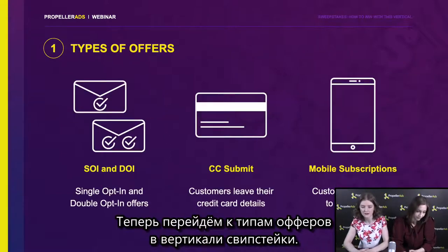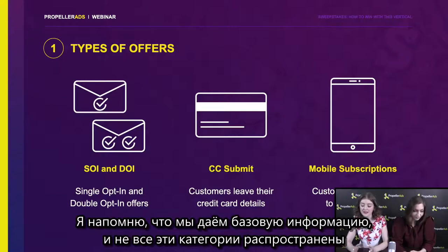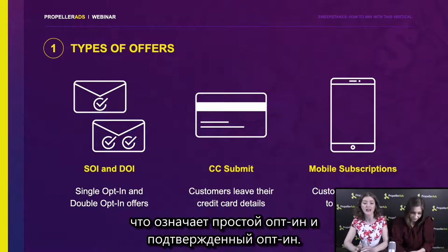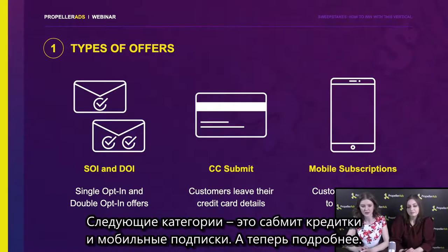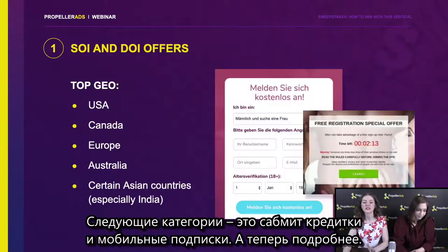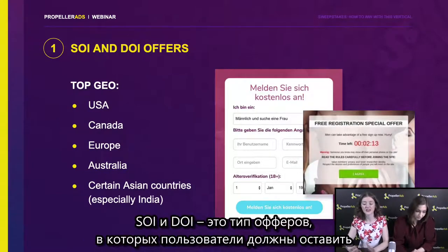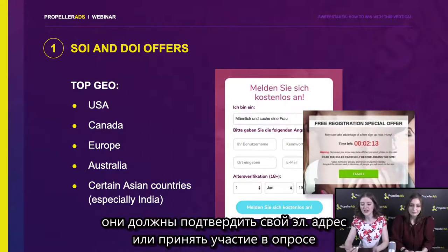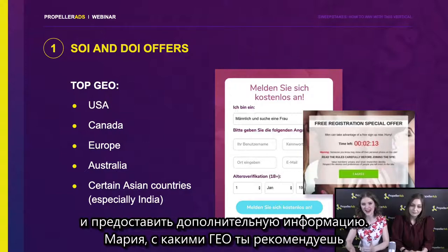Let's move on to the types of offers within this sweepstake vertical. These are the basics and it doesn't mean that all these categories are spread widely in PropellerAds — we're giving examples. The first category is SOI and DOI offers. The second category is credit card submit, and last but not least, mobile subscriptions. SOI and DOI offers are types of offers where users have to leave their info about email address or any other personal details. In the case of DOI — double opt-in — they should verify their email address or take part in special polls or questionnaires and provide extra info.